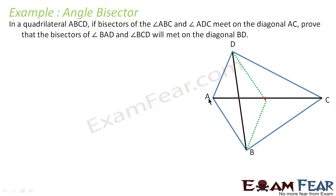We have to prove that the bisector of angle BAD and the bisector of angle BCD will meet on the diagonal BD. Let's draw these bisectors and assume that they meet at a point Q. We have to prove that AQ and CQ actually meet at point Q on BD.